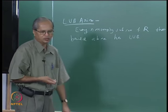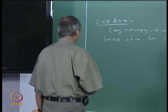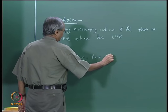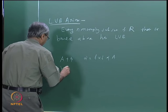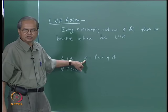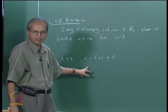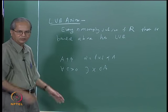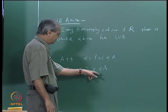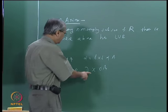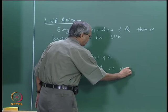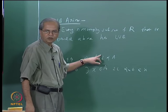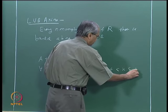The way in which the LUB or supremum comes into picture in various proofs is as follows. Suppose A is nonempty and alpha is the LUB of A. Then for every epsilon greater than 0, alpha minus epsilon is not an upper bound, so you can always find an element x in A which is bigger than alpha minus epsilon. This x may depend on epsilon — for different epsilon you may need different x. So there exists x in A such that alpha minus epsilon is strictly less than x, and x is less than or equal to alpha.